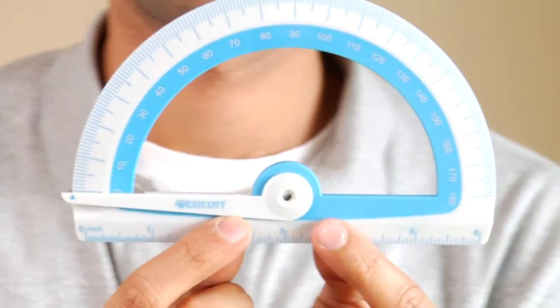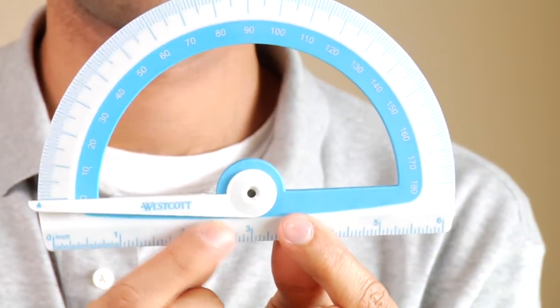A protractor was invented in 1801 by a gentleman by the name of Joseph Hardart.